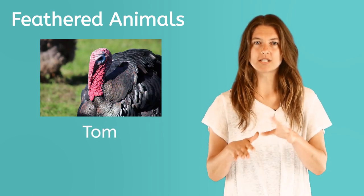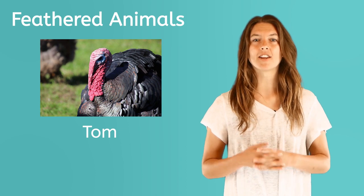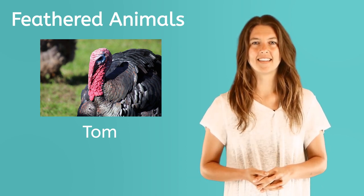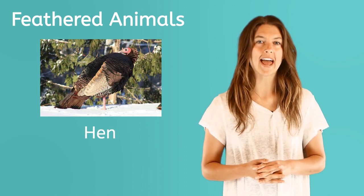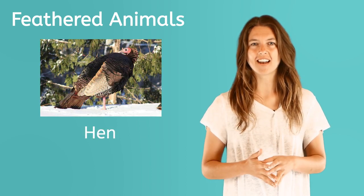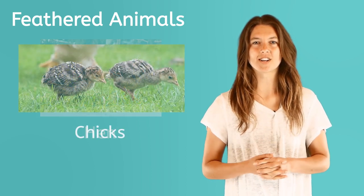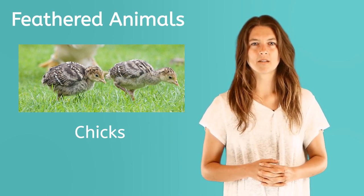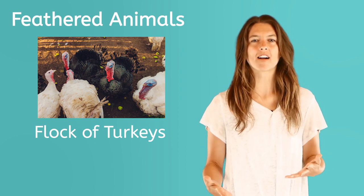Male turkeys, or toms, have brightly colored heads but have no feathers on their head. The female turkey, or hen, has some feathers on her head. Baby turkeys are called chicks and they hatch from eggs. When we talk about a group of turkeys, we call them a flock.